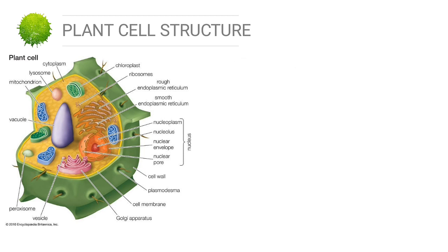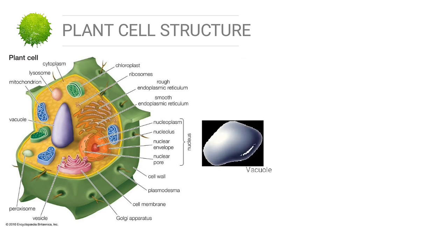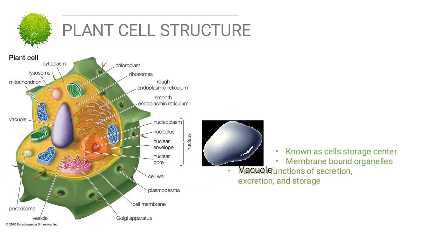The next plant cell organelle is the vacuole, known as the cell's storage center. It is a membrane-bound organelle that performs functions of secretion, excretion, and storage.